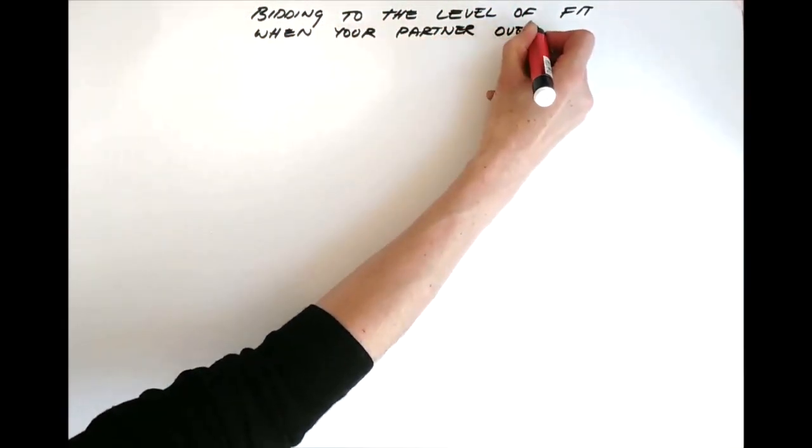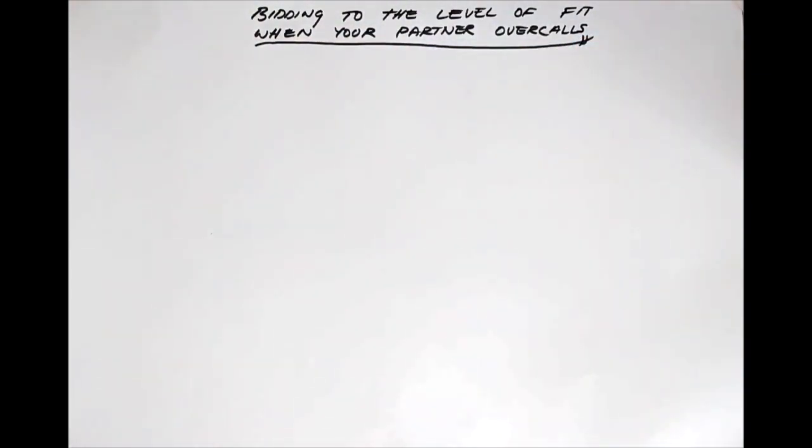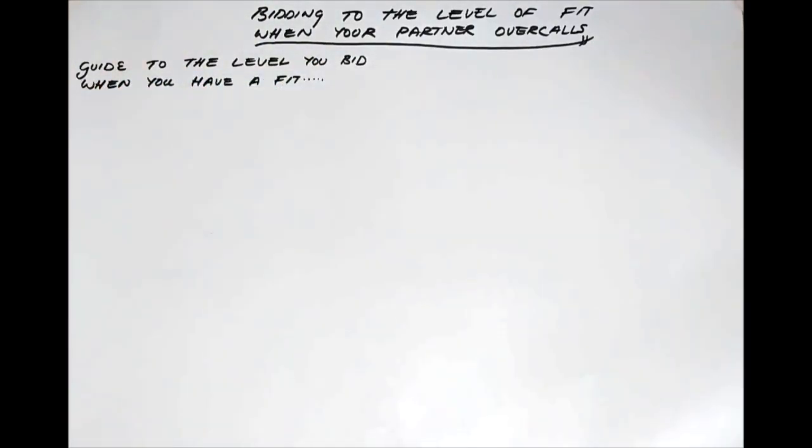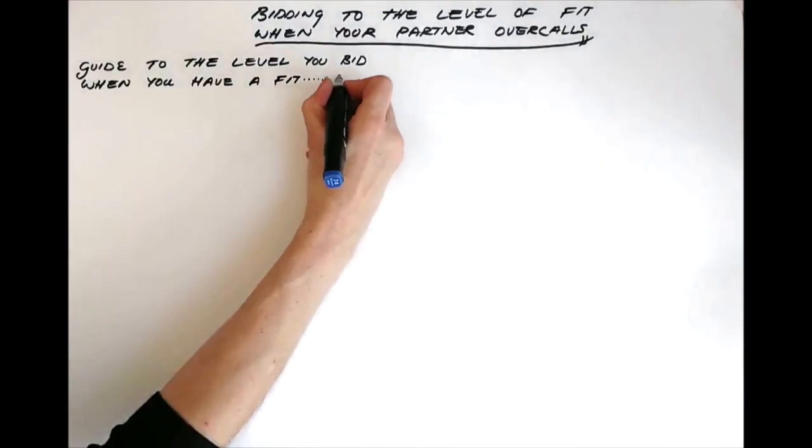Bidding to the level of fit when your partner overcalls. First of all, what is the level of fit? Well, it's a clever theory which gives you a guide to the level that you should bid to when you have a fit with your partner. A fit, of course, is eight or more cards between you in a suit.